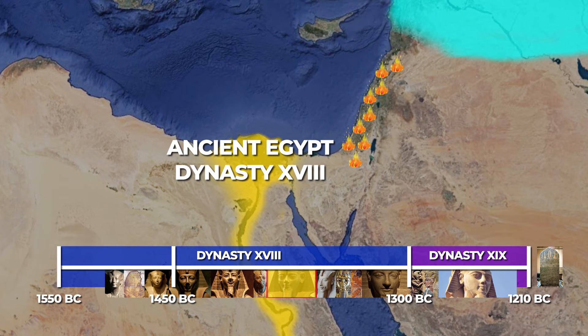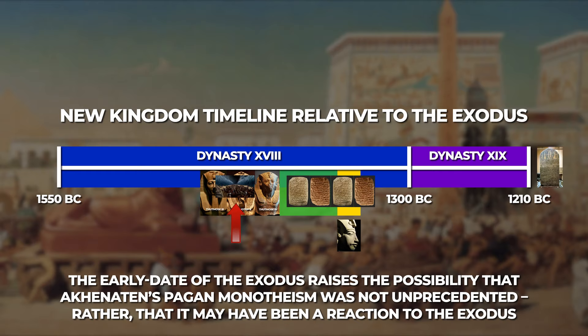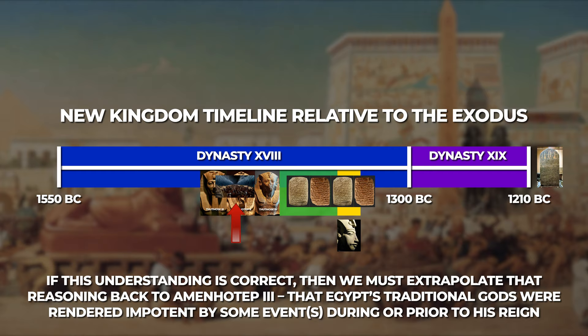A curiosity that shows up during Amenhotep's reign is the increased deference to the Aten, the deity that would later be given exaltation as the one true god of Egypt during the reign of Akhenaten. In the previous video, I put forth the possibility that Akhenaten's religious activity may have been a reaction to the destruction and humiliation brought on Egypt in the Exodus, if the early date of the Exodus is to be favored. If this understanding is correct, then we must extrapolate that reasoning back into Amenhotep's reign – perhaps his increasing deference to the Aten was a similar result of an event or sequence of events that demonstrated the impotence of Egypt's more traditional gods.